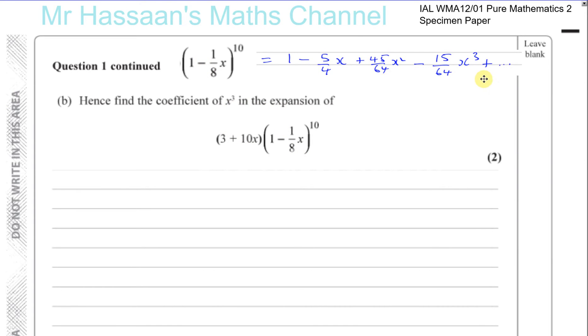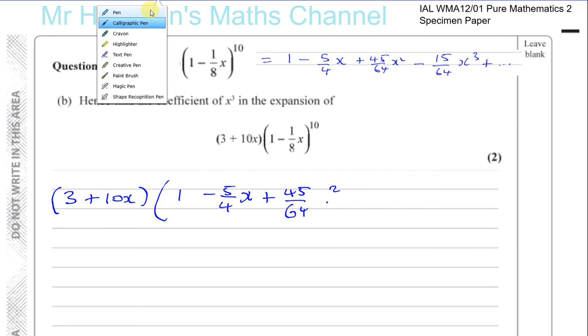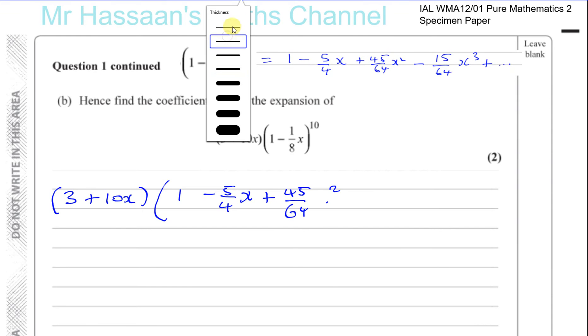So we already got the answer for part A up here, so what we can do is write this out. You've got 3 plus 10x times our expansion, which is 1 minus 5 over 4x plus 45 over 64x squared. So let's make that neater, x squared, and minus 15 over 64x cubed.